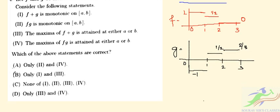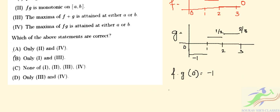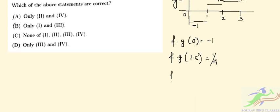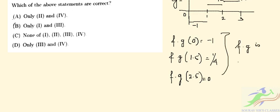Now we compute the product f·g. f·g at 0 is −1. f·g at 1.5 is 1/4. And f·g at 2.5 is 0. From here we can infer that f·g is not a monotonic function.